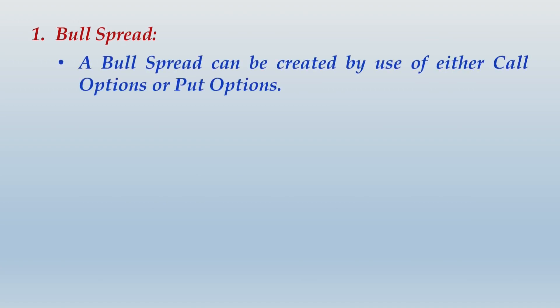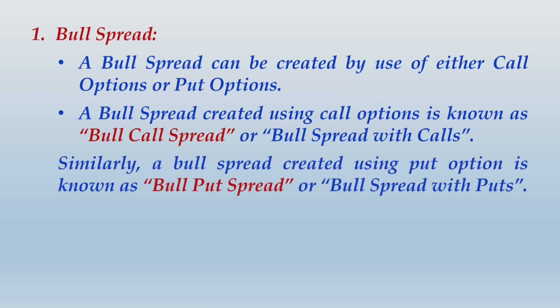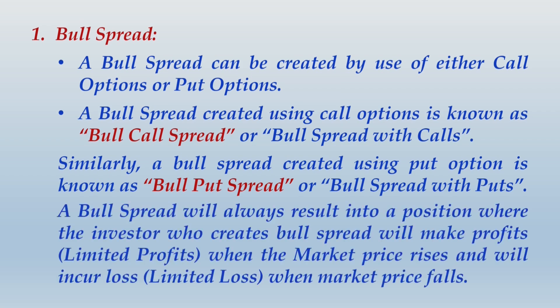Under the heading 'Bull Spread': A bull spread can be created by use of either call options or put options. A bull spread created using call options is known as a bull call spread or bull spread with calls. Similarly, a bull spread created using put options is known as a bull put spread or bull spread with puts. A bull spread will always result in a position where the investor makes limited profits when the market price rises and incurs limited losses when the market price falls.